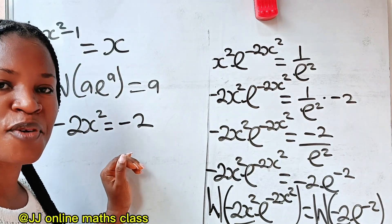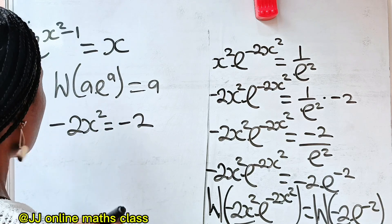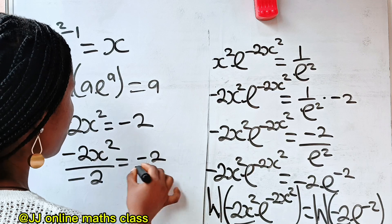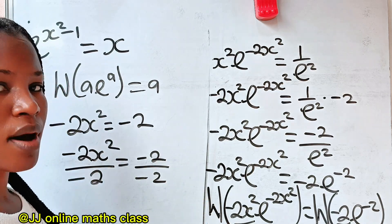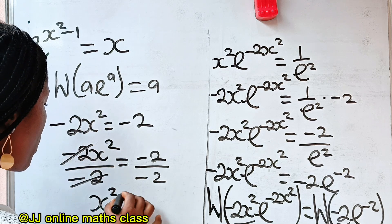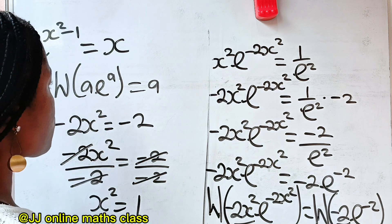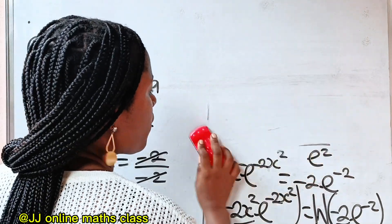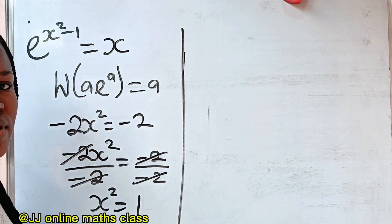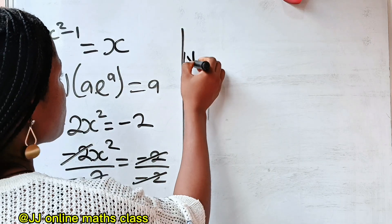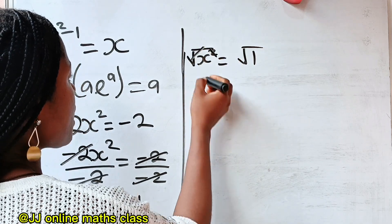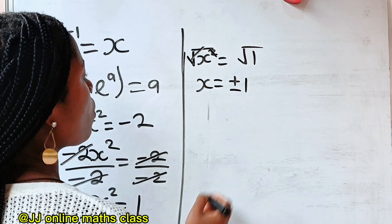Now we divide both sides of this equation by minus 2. So we have minus 2x squared divided by minus 2 equal to minus 2 divided by minus 2. Minus 2 divides itself to give 1, so what we have is x squared equal to 1. To get the value of x, we take the square root of both sides: square root of x squared equals square root of 1, so x equals plus or minus 1.